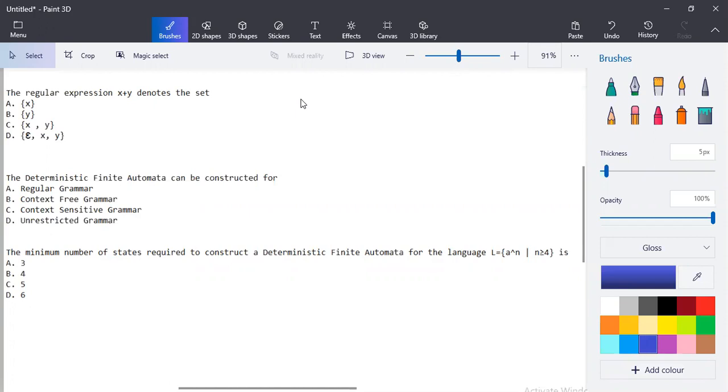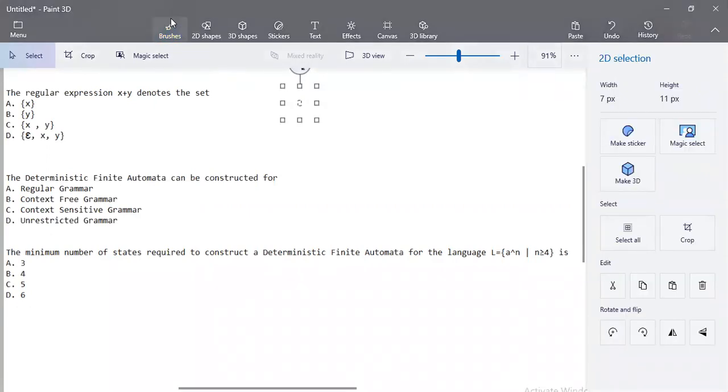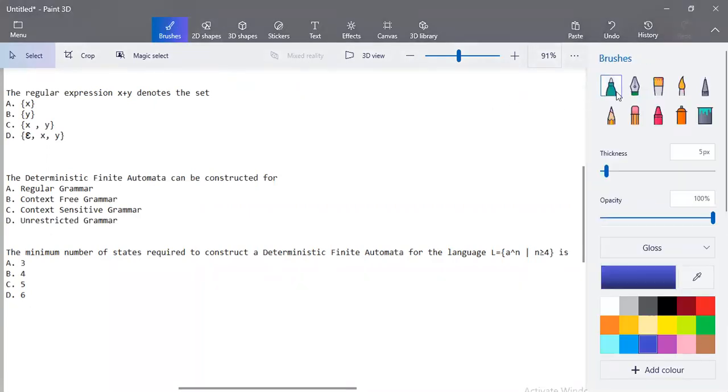So when it is x plus y, it actually means either x or y. When it is just x plus y, it means that set consists of x or y category. It is a union operation, so option c is the correct option. Epsilon comes when there is a closure star included. This is just a normal x or y, so it is x comma y.